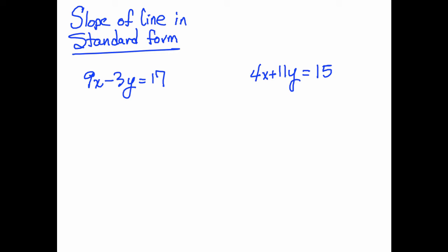Here's a quick video that explains how to find the slope of a line when the equation is written in standard form. The way to do this is to solve for y, and then the equation will be written in slope-intercept form, and you'll be able to see what the slope is and also what the intercept is.